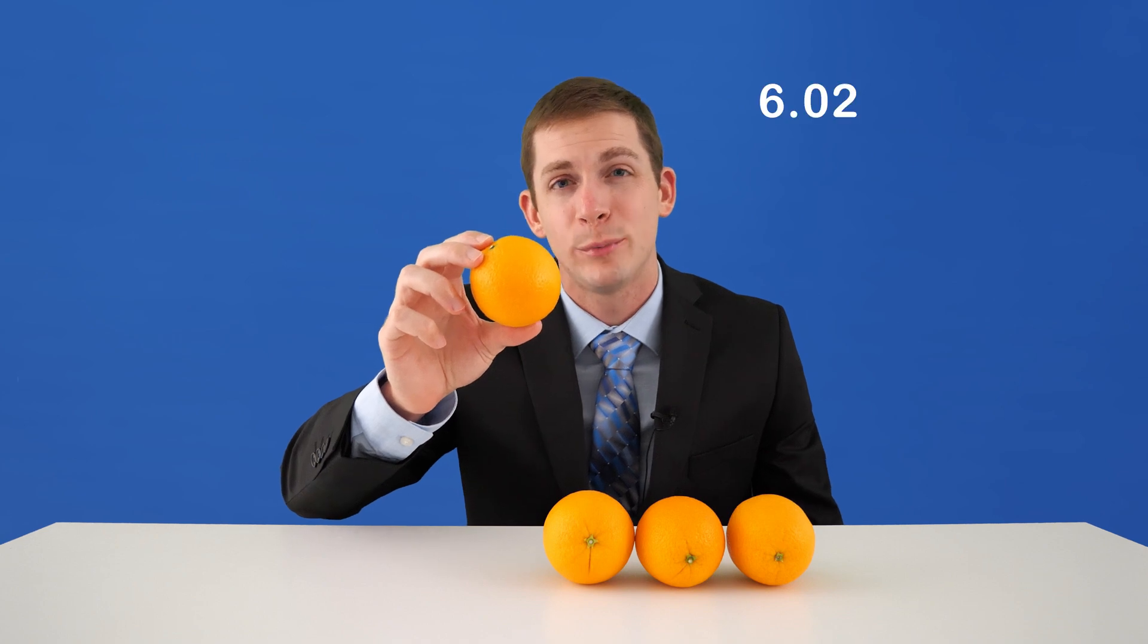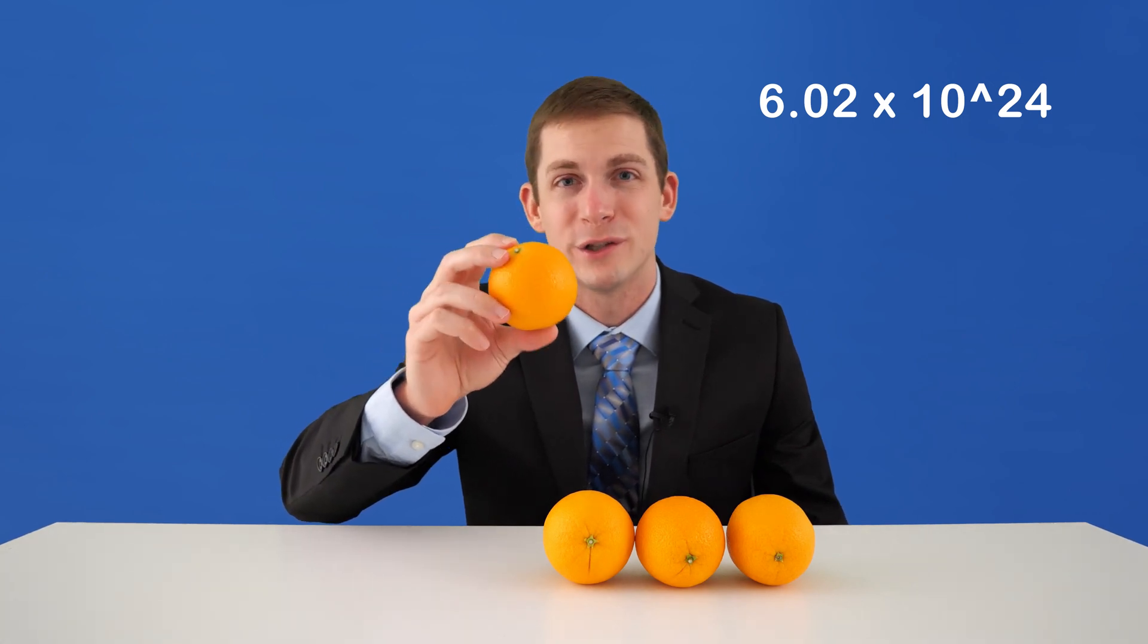This orange is actually made up of about 10 moles of atoms: carbon, hydrogen, and oxygen mostly. And all of these atoms are actually continuously changing their microstate. So in 0.1 seconds, you actually have 6.02 times 10 to the 24th atoms that all changed their position.